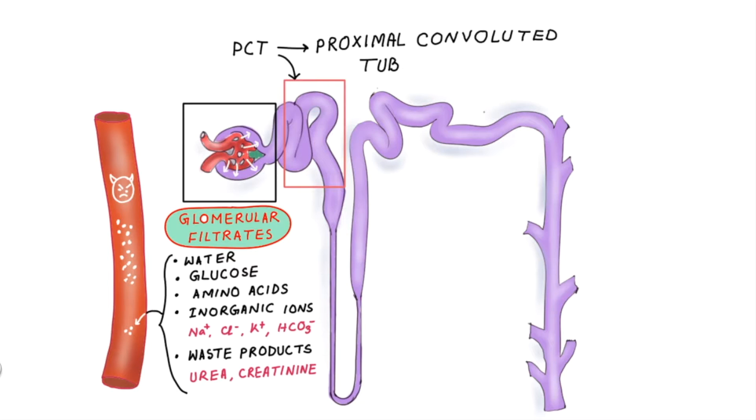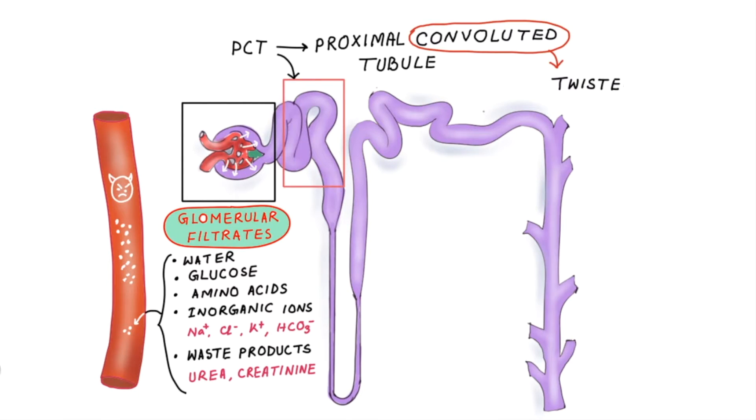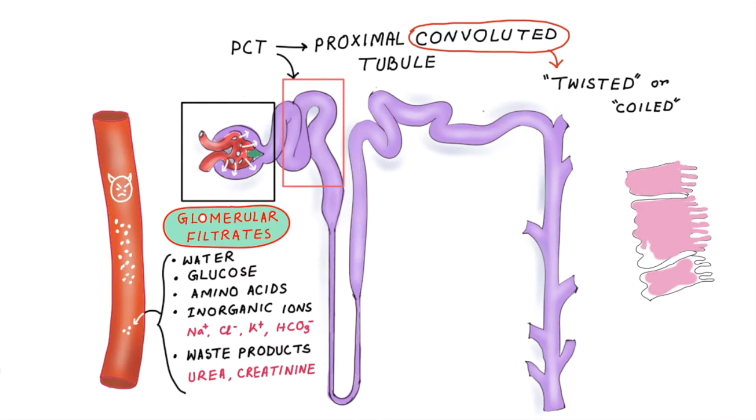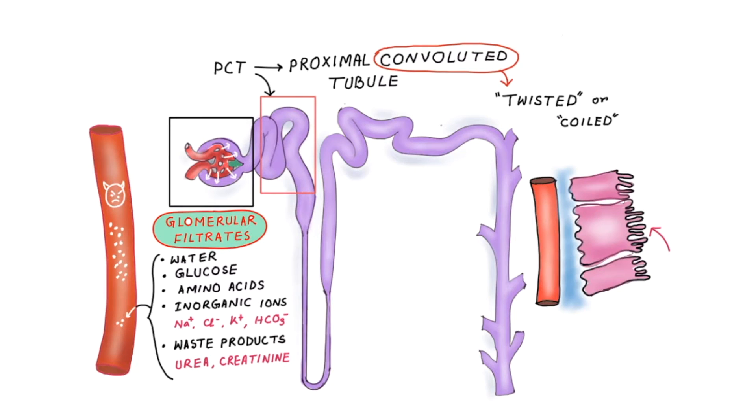The next destination for the filtrate is the proximal convoluted tubule. Convoluted simply means twisted or coiled. This region is lined by simple cuboidal epithelium and substances pass from the apical side to the basolateral side of the cells out into the interstitial fluid.